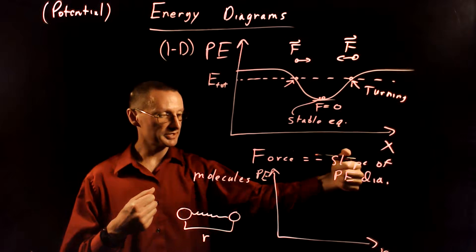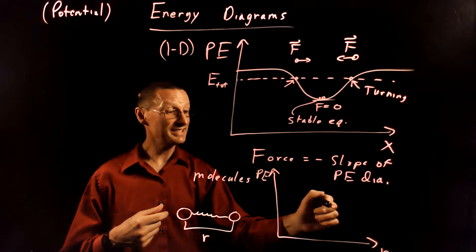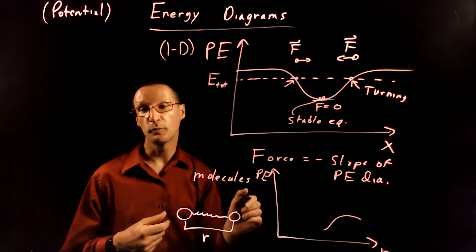So if you have it separated with a large separation distance, they want to attract. So they want to reduce R, which will be a negative force, which means I need a positive slope here.